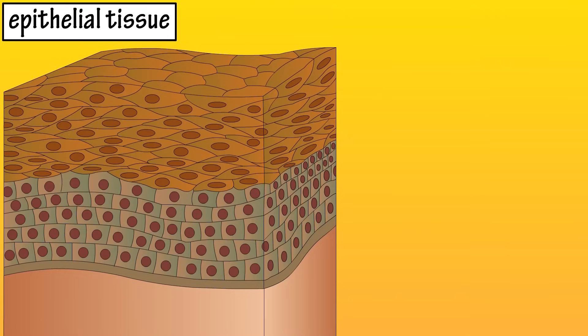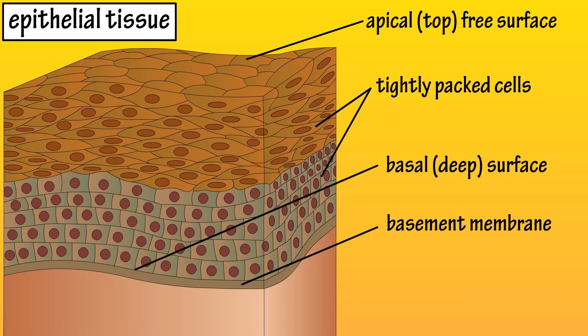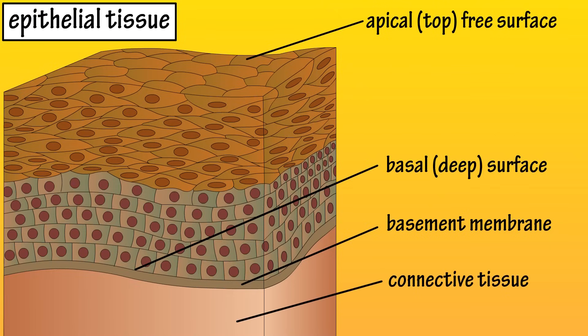Epithelial tissues have some common characteristics. They are comprised of tightly packed cells with very little extracellular space. They also have an apical or free surface that is exposed to an internal body space or the external environment, and a basal or deep surface that is attached to a thin basement membrane, which is connected to connective tissue, as you can see here.